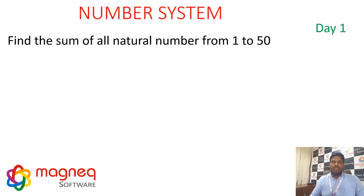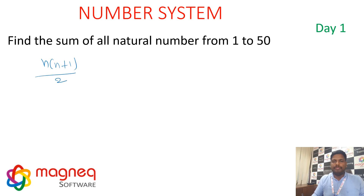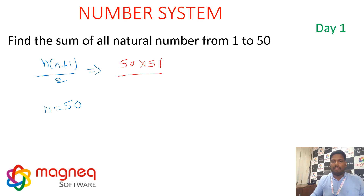Next, find the sum of all natural numbers from 1 to 50. Formula: n(n+1)/2. Here n = 50. So 50 × 51 / 2 = 25 × 51 = 1275.